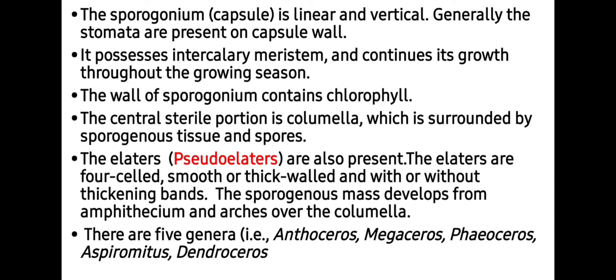Elaters or pseudo-elaters are also present in different genera. The elaters are multicellular, smooth or thick-walled, and may be with or without thickening bands. When they are without thickening bands, we call them pseudo-elaters, which are specially present in Anthoceros. The sporogenous mass develops from the amphithecium and arches over the columella.